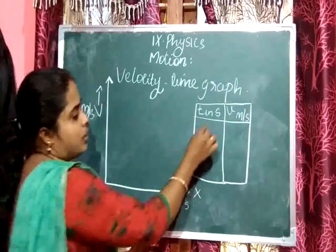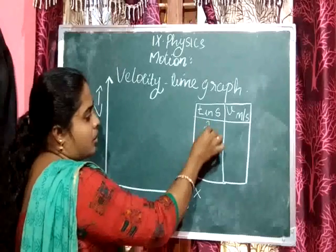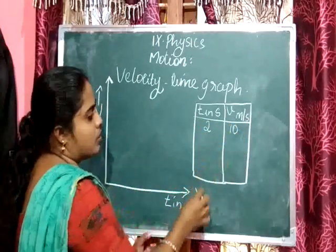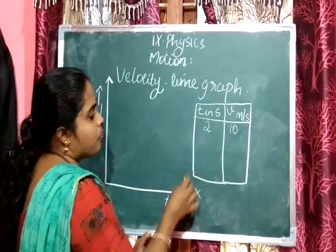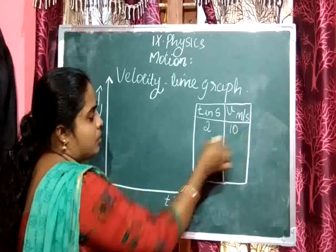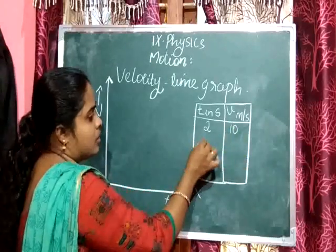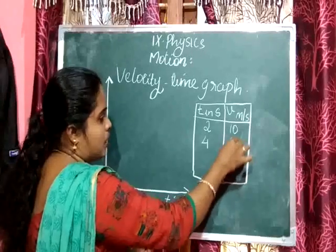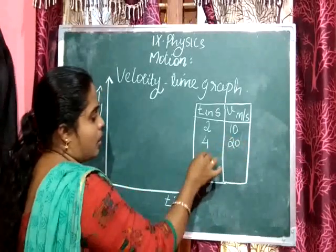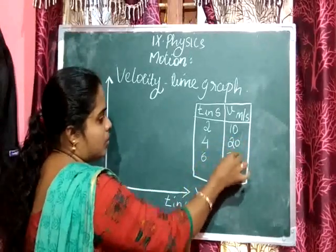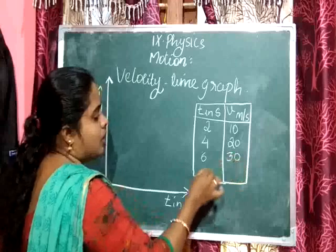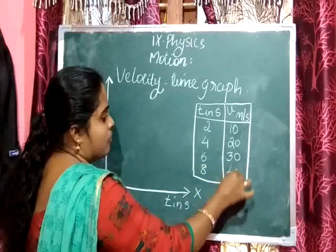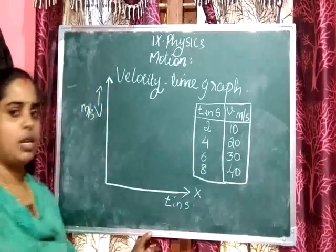Here the time interval and velocity are given — time in seconds and velocity in meter per second. After 2 seconds the object travels with a velocity of 10 m/s, after 4 seconds it is 20 m/s, after 6 seconds it is 30 m/s, and after 8 seconds it is 40 m/s.